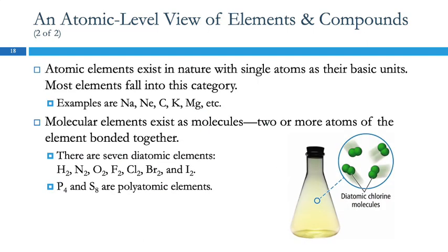So most elements exist as single atoms - sodium, neon, carbon, all of these. Molecular elements exist as molecules, two or more atoms bonded together. So there's seven diatomic elements. The diatomic elements have molecules of two atoms, diatomic two-atom molecules.